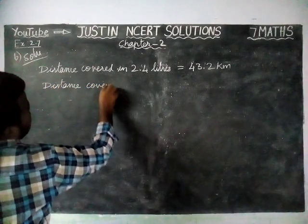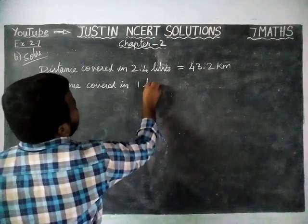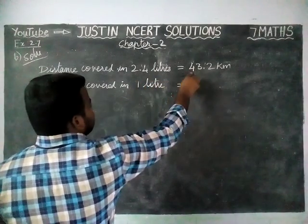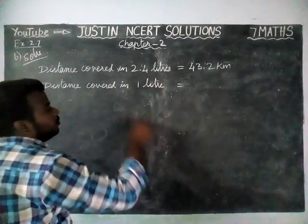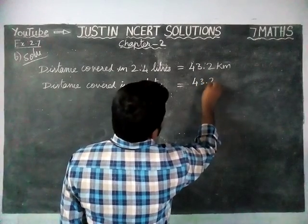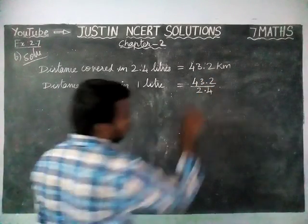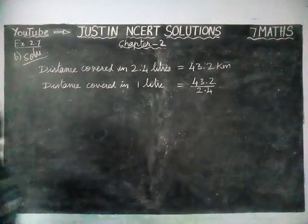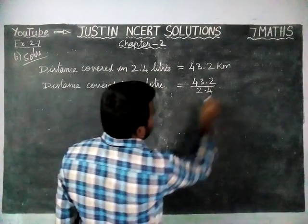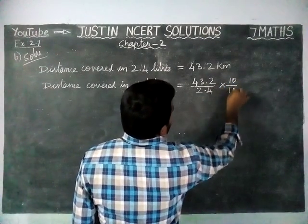Distance covered in 1 litre — we have to divide 43.2 by 2.4. Here, we have one decimal place, so we are going to multiply by 10 and divide by 10.